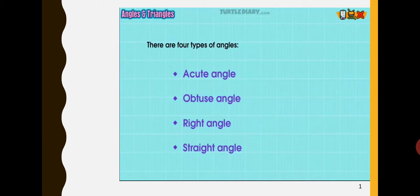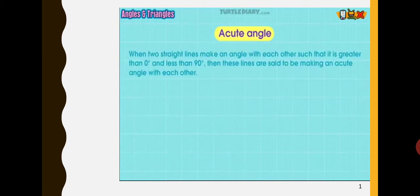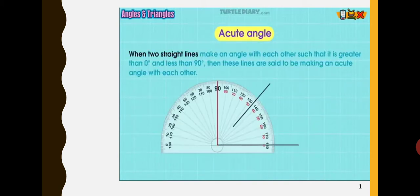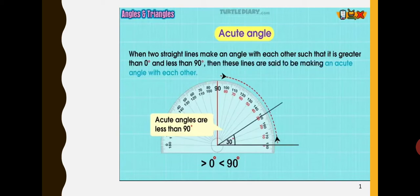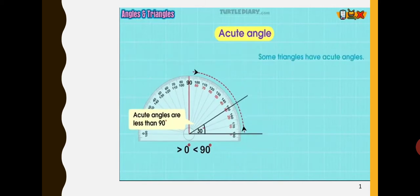Acute angle. When two straight lines make an angle with each other such that it is greater than zero degrees and less than 90 degrees, then these lines are said to be making an acute angle with each other. Some triangles have acute angles.